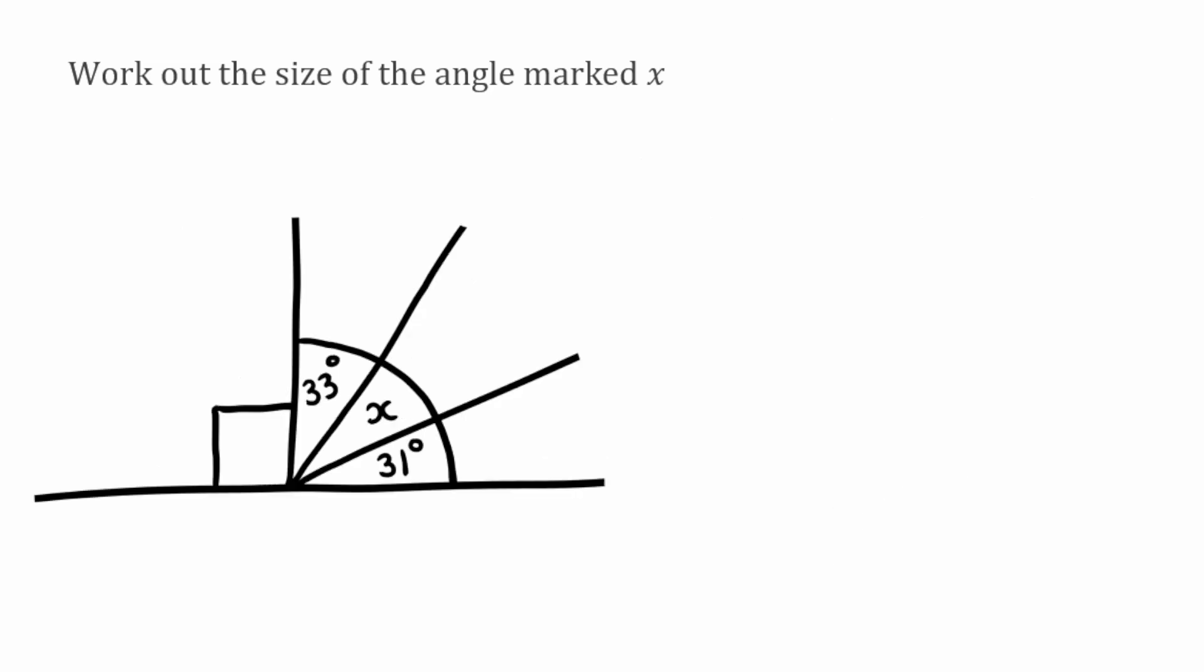Okay for this next one, again we're figuring out the size of the angle marked X. We've now got four angles. So moving left to right we've got a right angle, we've then got 33, we've then got our missing angle X and then we have 31. So we're going to do the same thing here. We're going to add together the angles that we know the size of.